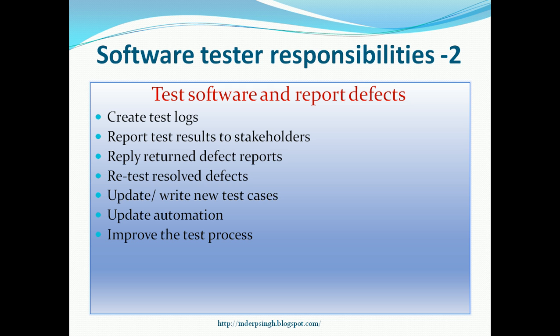One responsibility of the tester is to improve the overall test process. Organizations today work in highly competitive markets with a lot of pressures and constraints, and it is always a goal for the tester to make their testing better and more efficient. Whenever there are opportunities to improve the test process, the tester should discuss these with the team to get consensus and implement those improvements. Another administrative responsibility is to log time in the project management or test management software to ensure correct data is available for analysis.